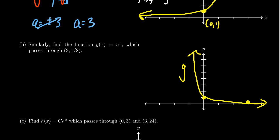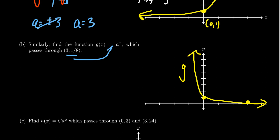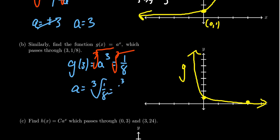So roughly speaking, this is what the graph g would look like. But just like the last example, we can use this point. We can plug it into our formula right here. And so g of 3 tells us that a cubed is going to equal 1 eighth. So taking the cube root of both sides, we end up with a is equal to, well, the cube root of 1 eighth, which is the same thing as the cube root of 1 over the cube root of 8, which gives us 1 half. So that's the base there. And like we saw in the previous video, if your base is less than 1, that's a decay model. If your base is greater than 1, you're going to have a growth model.